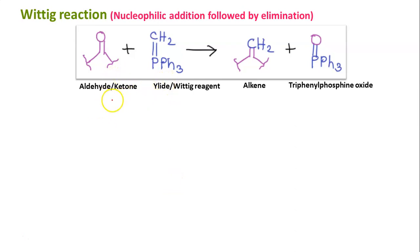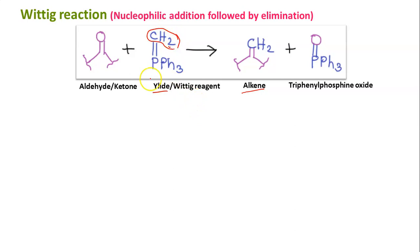The two starting materials are: first, an aldehyde or ketone (because a carbonyl group is present), and second, the carbanionic nucleophile known as the Wittig reagent, or ylide. The final product shown in this scheme is an alkene. The CH₂ present in the ylide is now attached to the carbonyl carbon, the C=O bond is broken, and oxygen is now attached to phosphorus. The main product is alkene, and the byproduct is triphenylphosphine oxide.